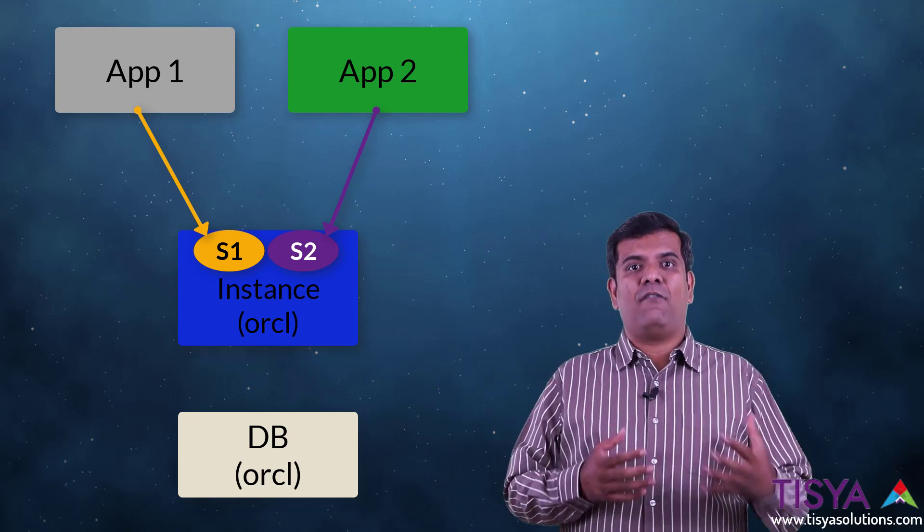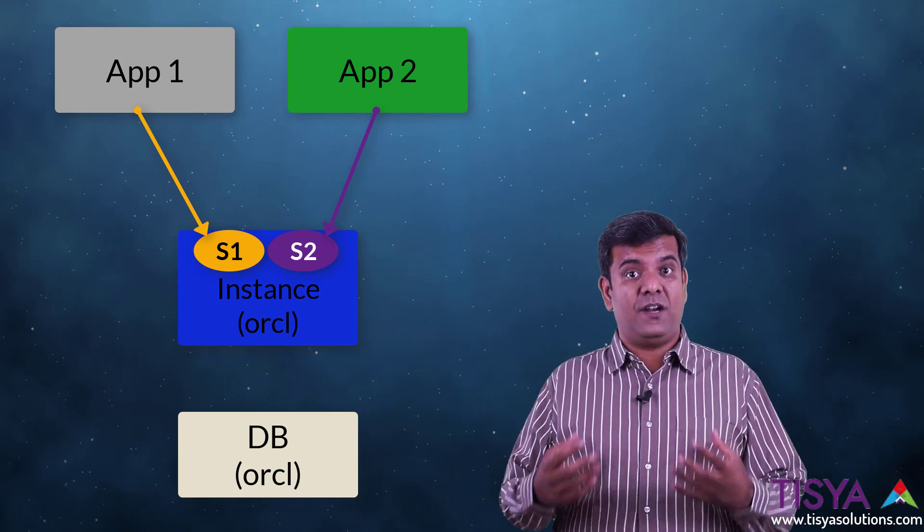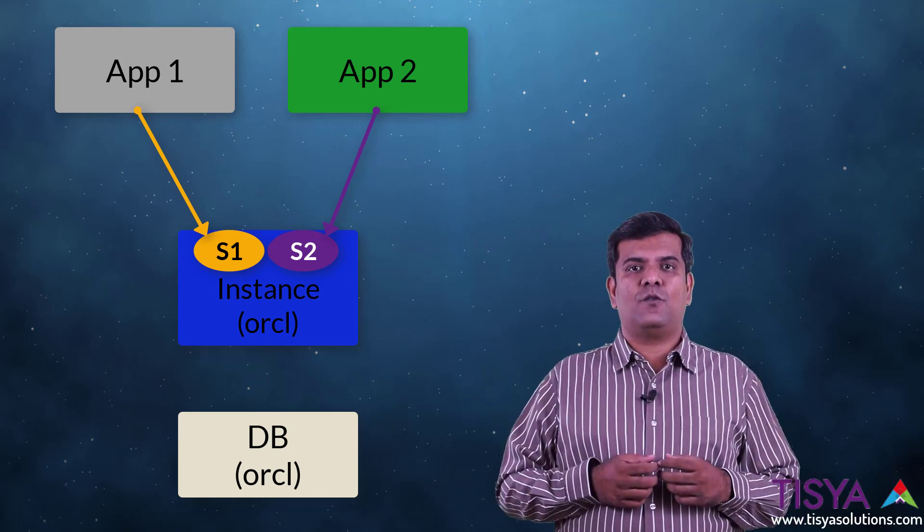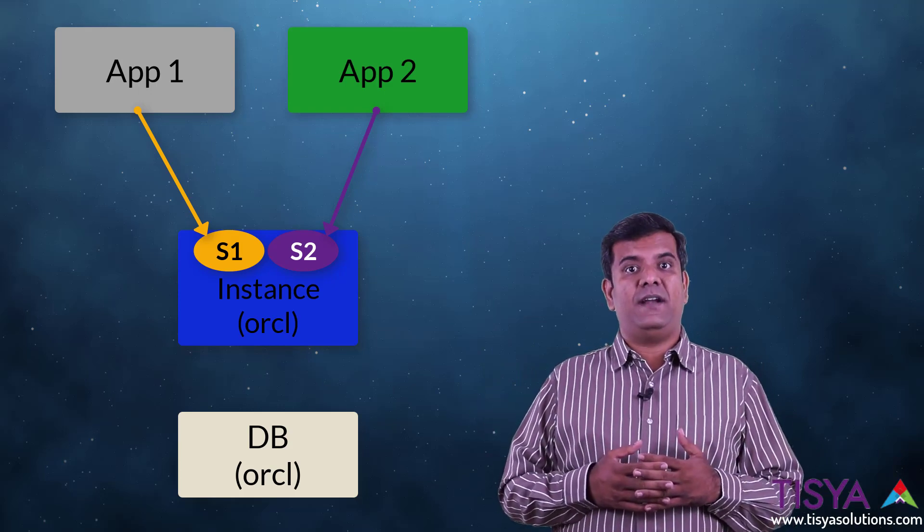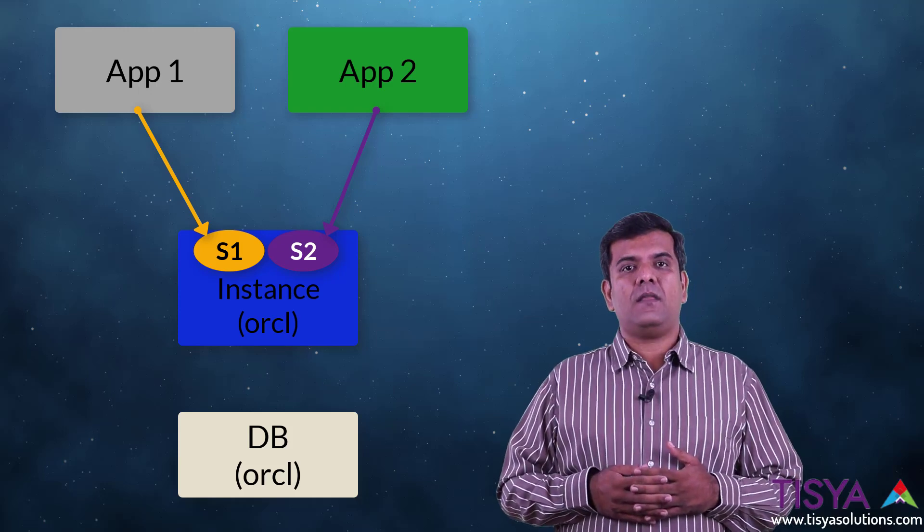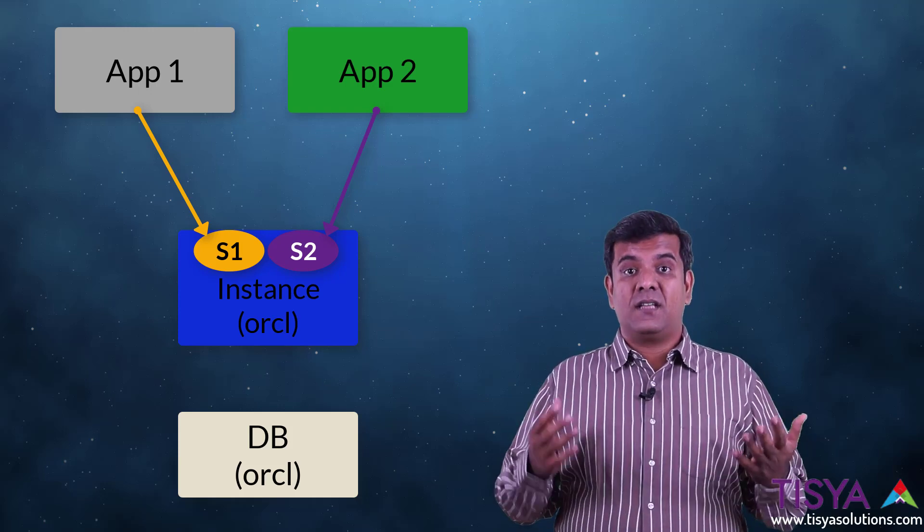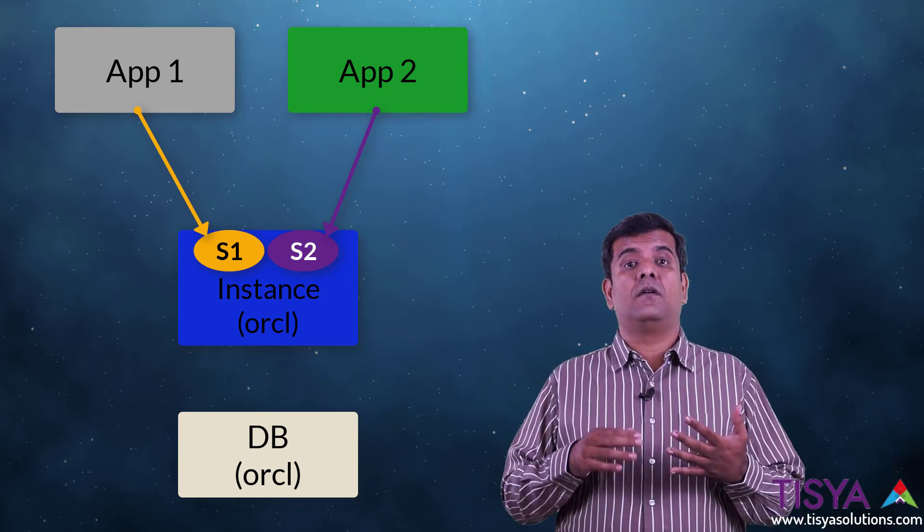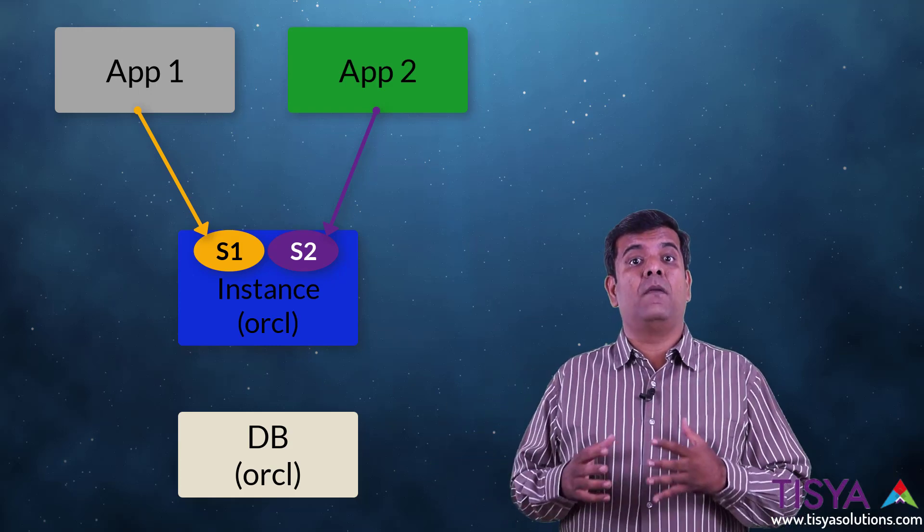Now, when you have a problem, you have a performance dimension with services wherein you can see over a period of time which service has consumed how much of resources. This gives you an immediate way to identify who is the culprit today to cause a problem with your application performance and database performance. Services can give you information about how much CPU they have consumed, which service is waiting for what, and a host of metrics that come with services.